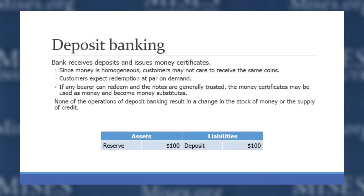In deposit banking, the bank receives deposits — somebody walks in with gold in a commodity money system — and the bank issues a money certificate, a receipt saying this person has deposited this amount of money. If something is a deposit, it means that person can come back and claim the same amount of money at par on demand. And if money is homogeneous, they might not be concerned with getting the actual physical gold coins back — they're just interested in getting the same weight of gold back when they redeem their deposit.